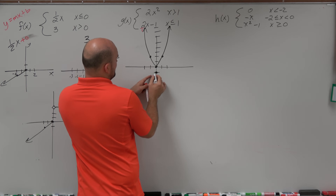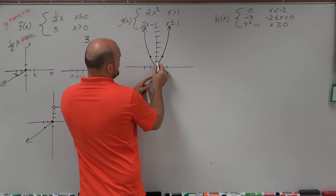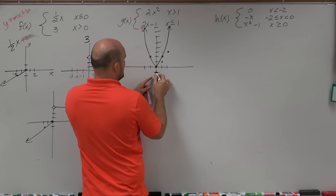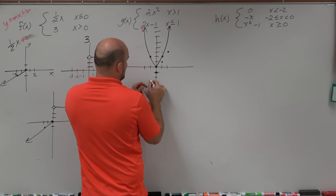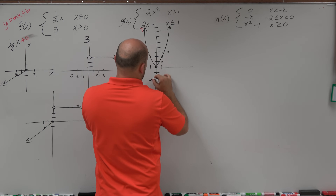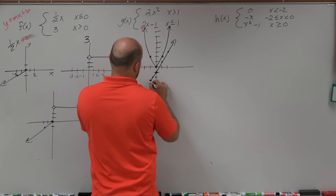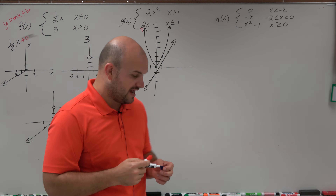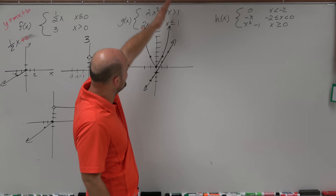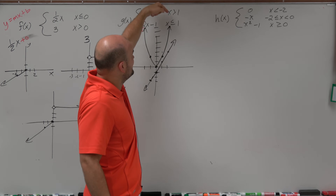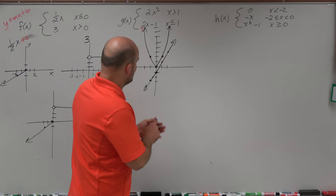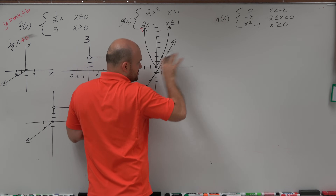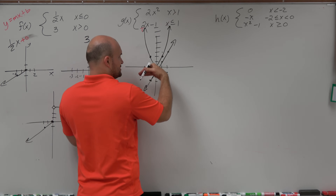So we go to the y-intercept and then go up 2 over 1. You could also go to the left down 2 over 1. So that's what our two graphs separately look like. Then we basically go to where our constraint is. We're only going to use 2x squared when x is greater than 1 — so we go to where 1 is. Greater than 1 is going to the right, less than 1 is going to the left.